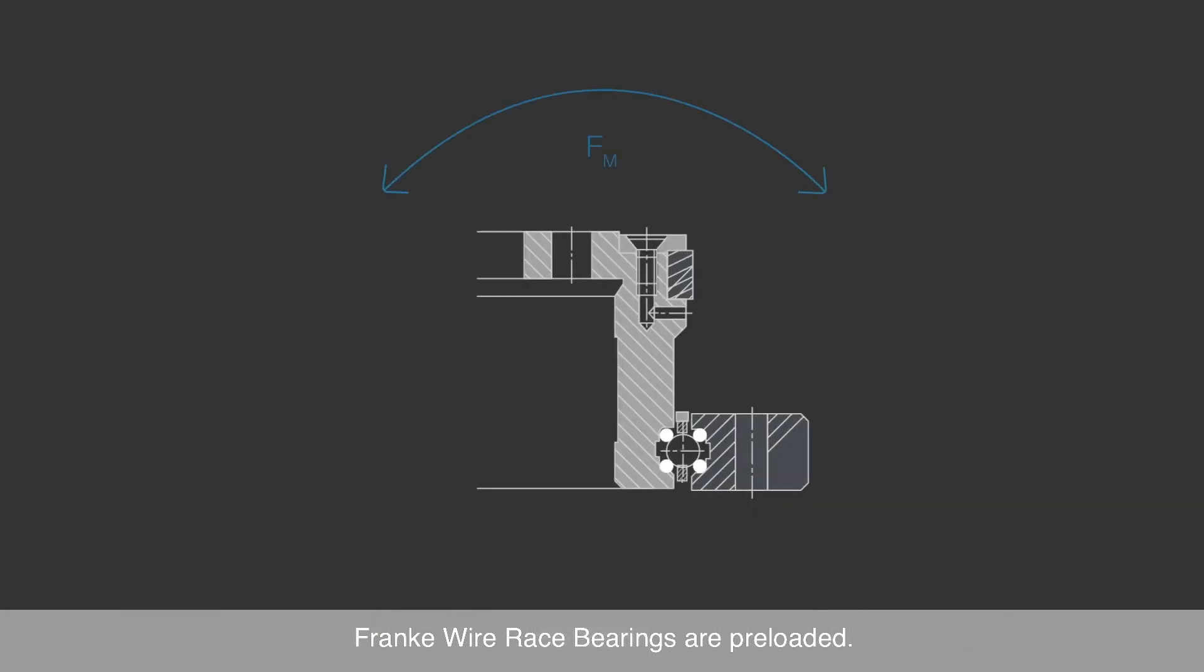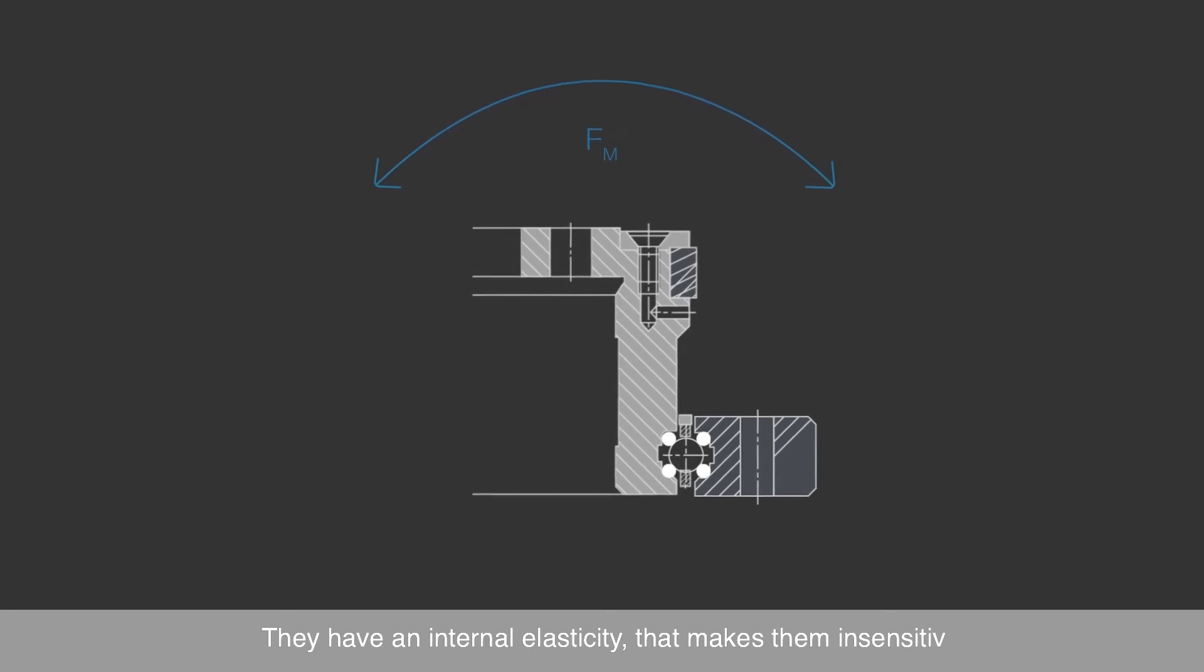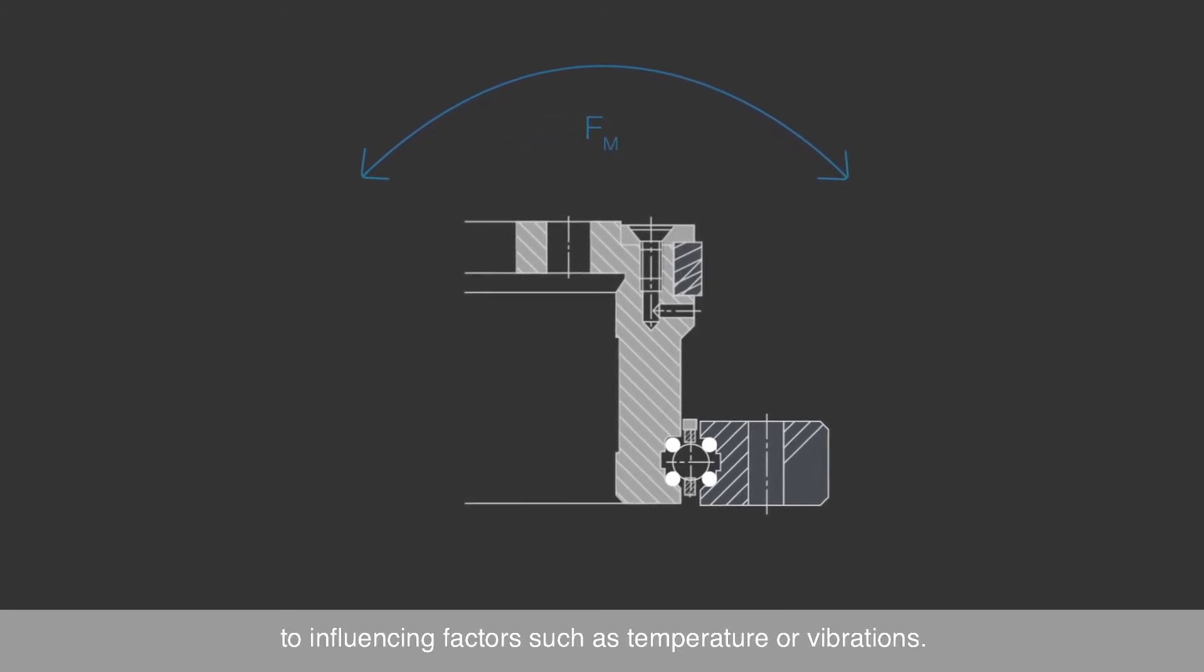Franke wire race bearings are pre-loaded. They have an internal elasticity that makes them insensitive to influencing factors such as temperature or vibrations.